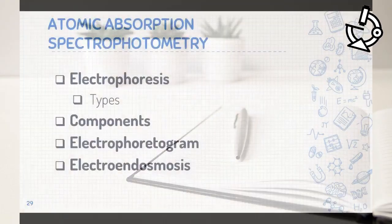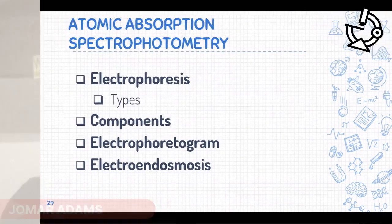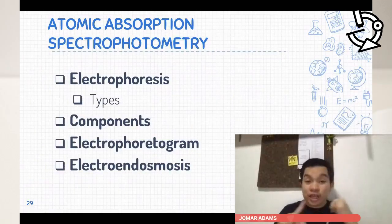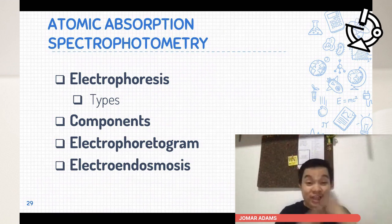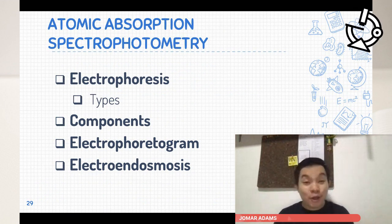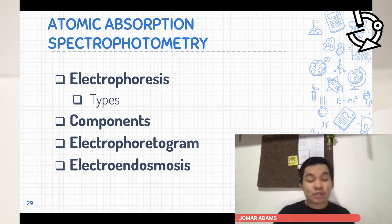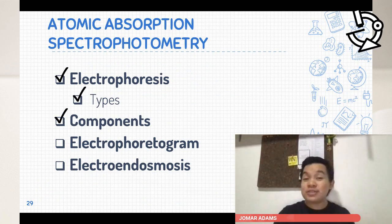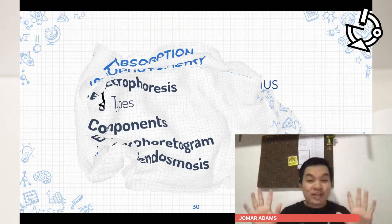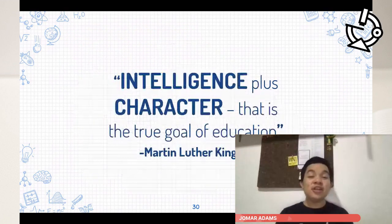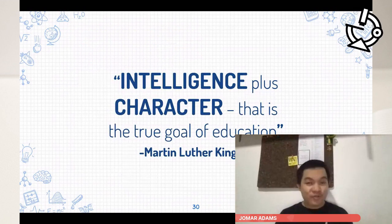Electrophoresis is very important because you can separate LDH-2 from LDH-1. To summarize, we covered: the types of electrophoresis (ionophoresis and zone electrophoresis), the components, the electrophoretogram, the detecting system, and electroendosmosis. If you have any questions, feel free to comment below.